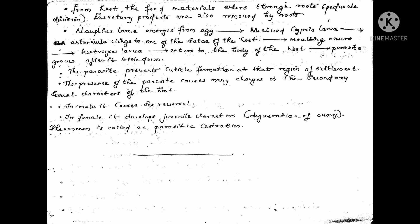The parasite prevents cuticle formation in the body. In the case of the male, the testes degenerate, effectively reversing sex characteristics. The female reproductive organs also degenerate. This phenomenon is called Parasitic Castration.